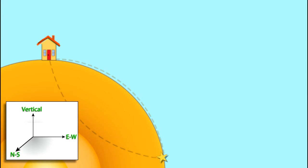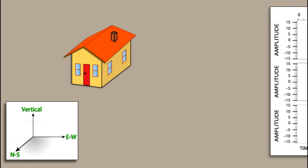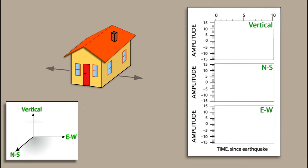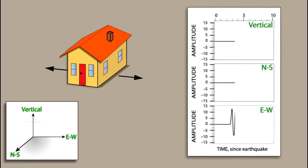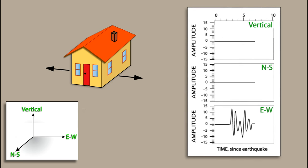Let's take a close-up, exaggerated look at how a house would be affected by each direction of motion. When the house is shaken in the east-west direction, this shows up on the lower component. Nothing is recorded on the north-south or vertical components.